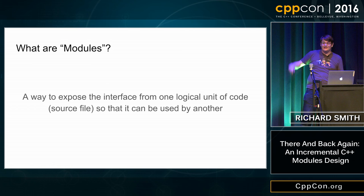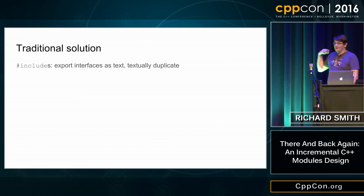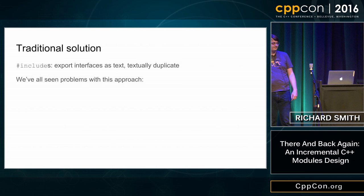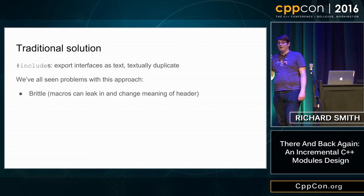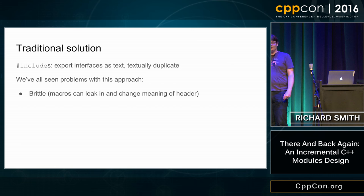Some of you are thinking: we have a solution — we use #includes. #includes mean we textually duplicate the interface of a module into each one of its users. This has a number of problems. One is that it's really brittle. If someone defines a macro and then includes your header, that can change the meaning of your header in a way you didn't intend. It's not just macros — if someone declares a function and then includes your header, that can change the meaning as well. Someone defines an operator left-shift for some type to stream it, and then includes a header, and how that type is written to ostreams depends on whether some other header was included first.